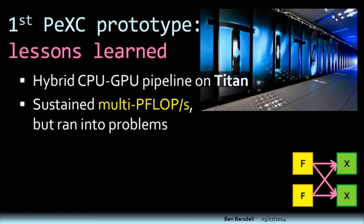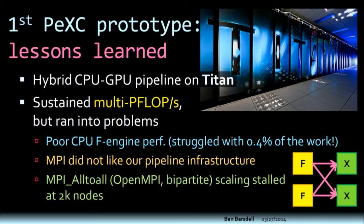I'll give a quick recap of some work we did last year and some lessons learned. We tried to run a hybrid CPU-GPU pipeline on the Oak Ridge National Labs Titan cluster. This was basically running the F-engine — that is the FFT — on the CPUs, and then putting the X-engine, the cross-correlation, on the GPUs, with the intent of maximizing the flops we could get out of the GPU and therefore maximizing total flops, assuming they were dominated by the cross-correlation. We did actually manage to sustain multiple petaflops, but we ran into a large number of problems. First, we got very poor CPU performance — we were shocked at how poor it was. The total workload for the CPU was about 0.4% of the total work, and it was struggling, holding everything else back.